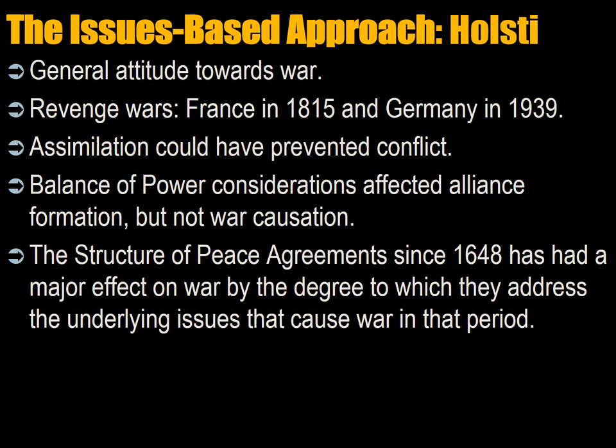A major variable for Holsti is the general attitude towards war among leaders, populations, and intellectuals. A major motive for conflict was revenge wars, such as France in 1815. When the British fought the Seven Years' War, they used Prussia to distract all the other major European powers, and the British were able to defeat the French in Quebec and defeat the French in India and build the beginnings of their large empire.